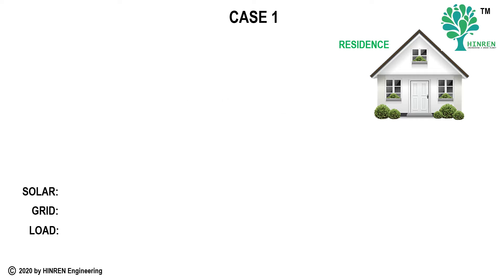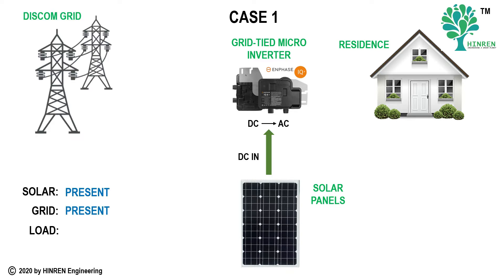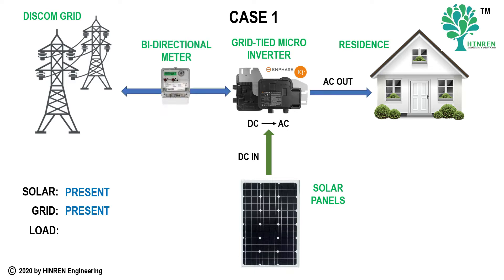In a net metering solar PV system, we have solar panels generating DC power, a grid-tie inverter, and the DISCOM grid. DISCOM is the distribution company responsible for power distribution in the locality, and of course you have the load. Between the inverter and the DISCOM grid, there is a bi-directional meter which records both the energy taken from the grid and the energy given to the grid. This bi-directional meter is used for billing purposes.